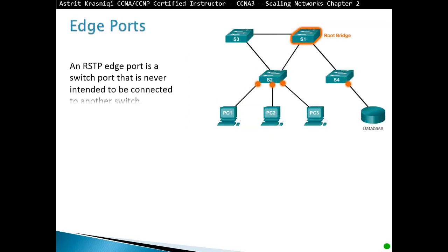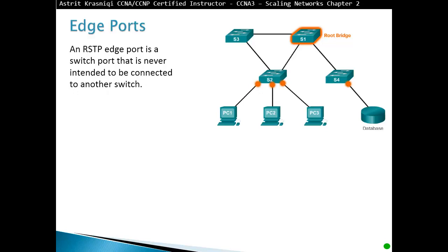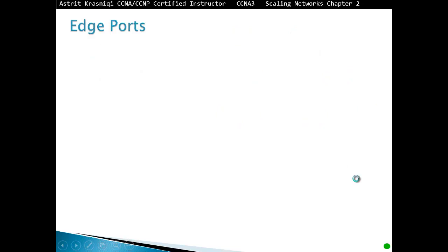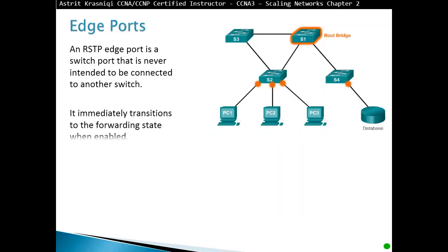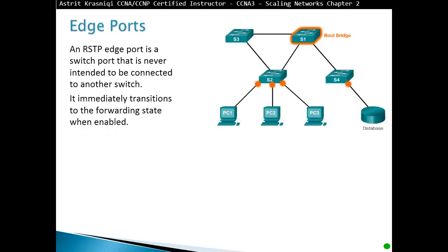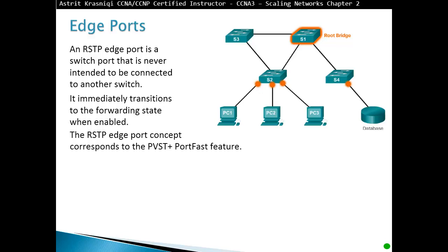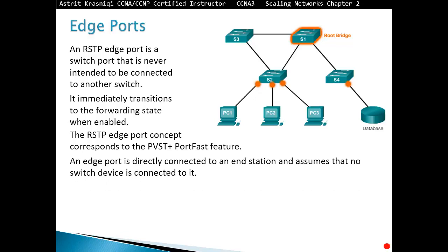An RSTP edge port is a switch port that is never intended to be connected to another switch — it connects to an end device or router, never a switch or hub. It immediately transitions to the forwarding state when enabled. The RSTP edge port concept corresponds to the Per-VLAN Spanning Tree PortFast feature. An edge port is directly connected to an end station and assumes no switch device is connected to it.